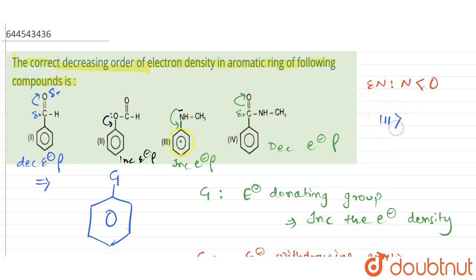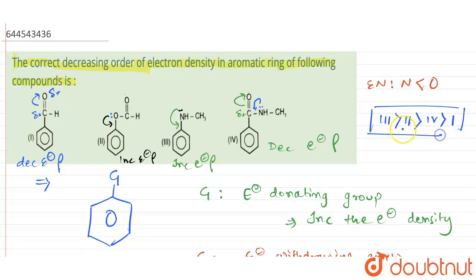Among compounds one and four, the nitrogen in compound four has a lone pair that can donate electrons to stabilize the electron deficient carbon, whereas compound one has only hydrogen present, which does not donate electrons as effectively. Therefore compound four has better electron density than compound one. The correct decreasing order is: third, second, fourth, first — where third has the maximum and first has the least electron density.